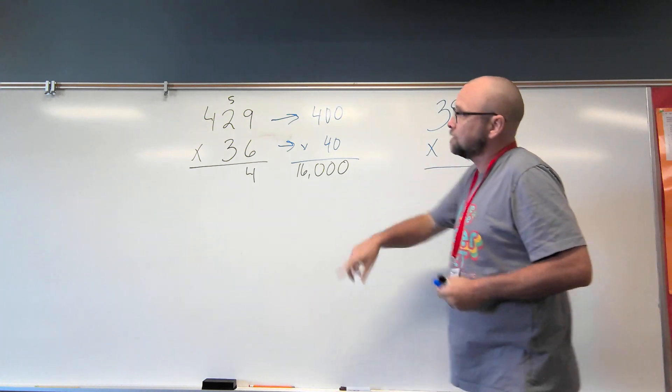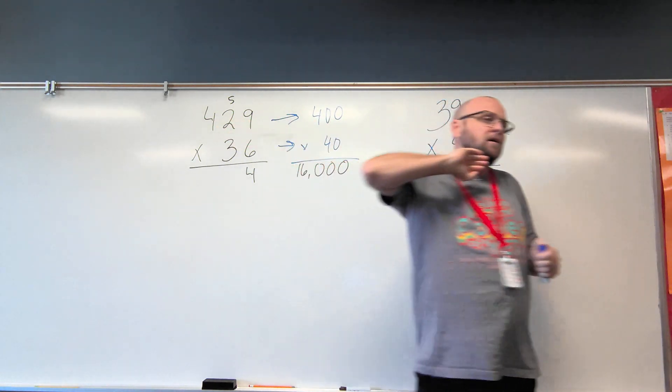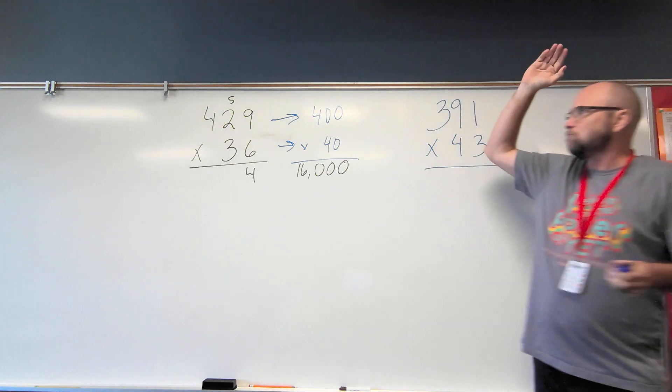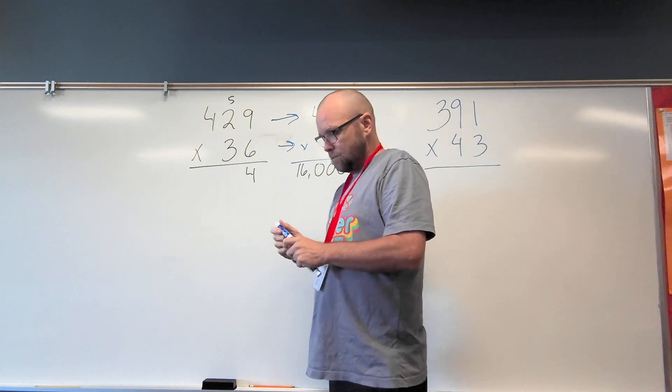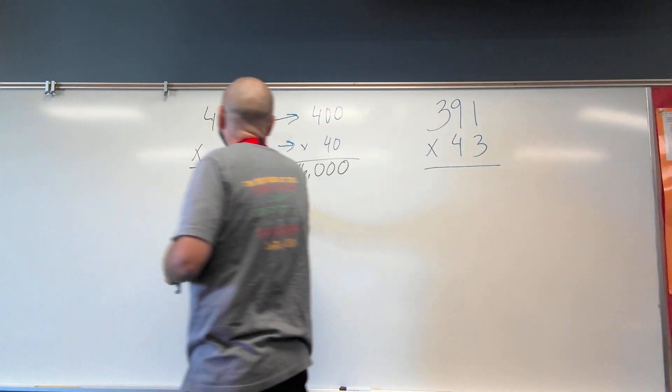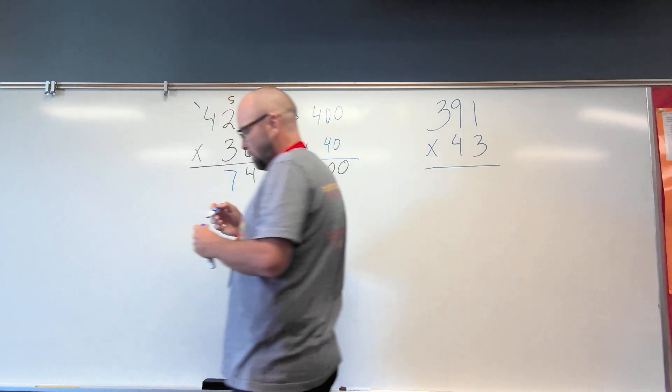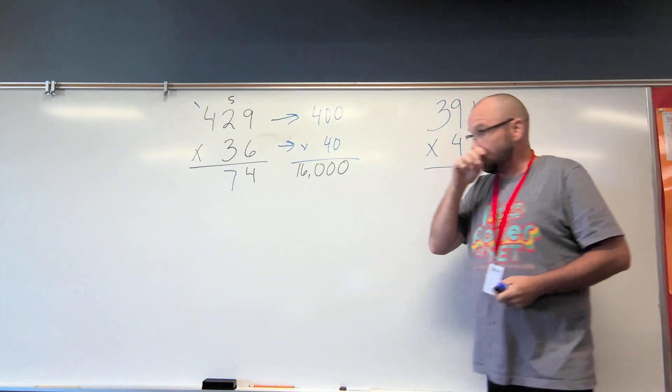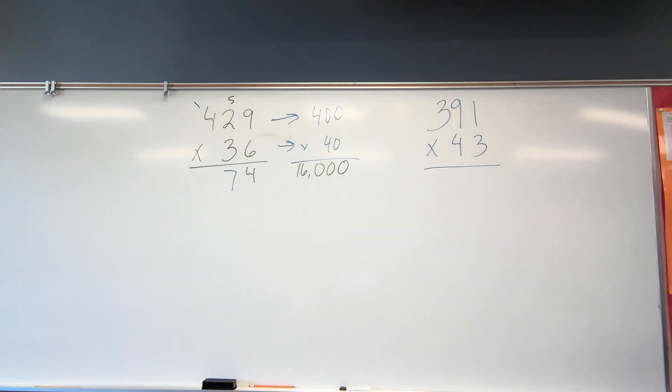Now I have six ones times two tens, which is 12 plus five more, which is 17. Then I bring that up because I have 17 tens, which is the same as 100 and seven tens.